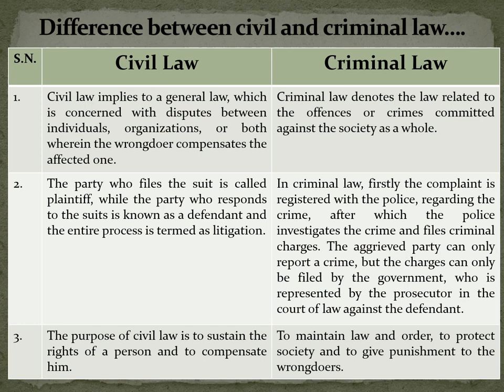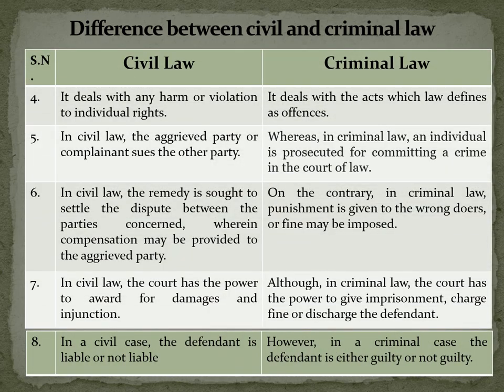Whereas in criminal law, the complaint is registered with the police regarding the crime, after which the police investigates and files criminal charges. The aggrieved party can only report a crime, but the charges can only be filed by the government, represented by the prosecutor in the court of law against the defendant. The purpose of civil law is to sustain the rights of a person and to compensate him, but in criminal law the purpose is to maintain law and order, protect society, and punish wrongdoers. Civil law deals with any harm or violation of individual rights, and criminal law deals with acts which the law defines as offenses.